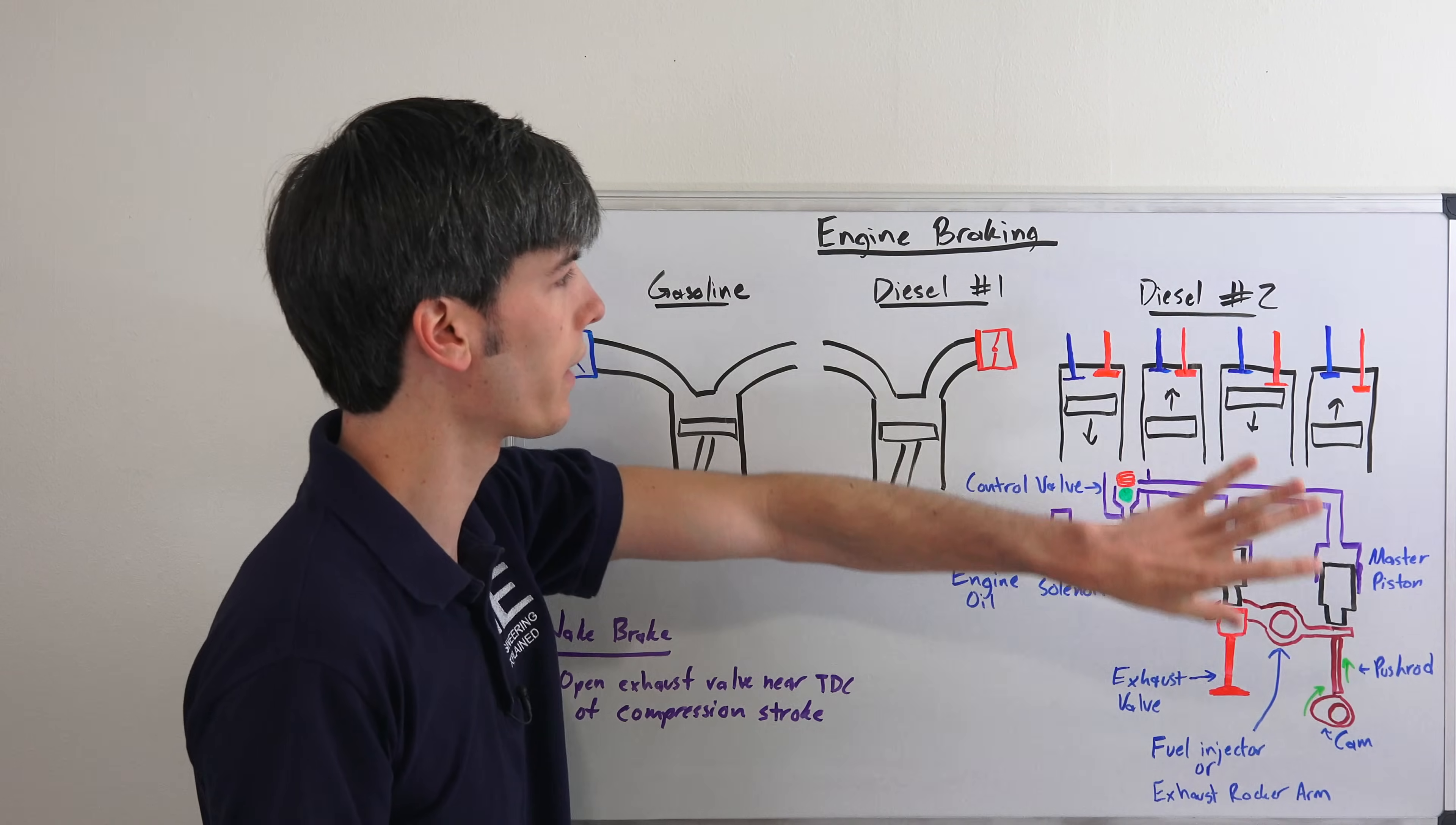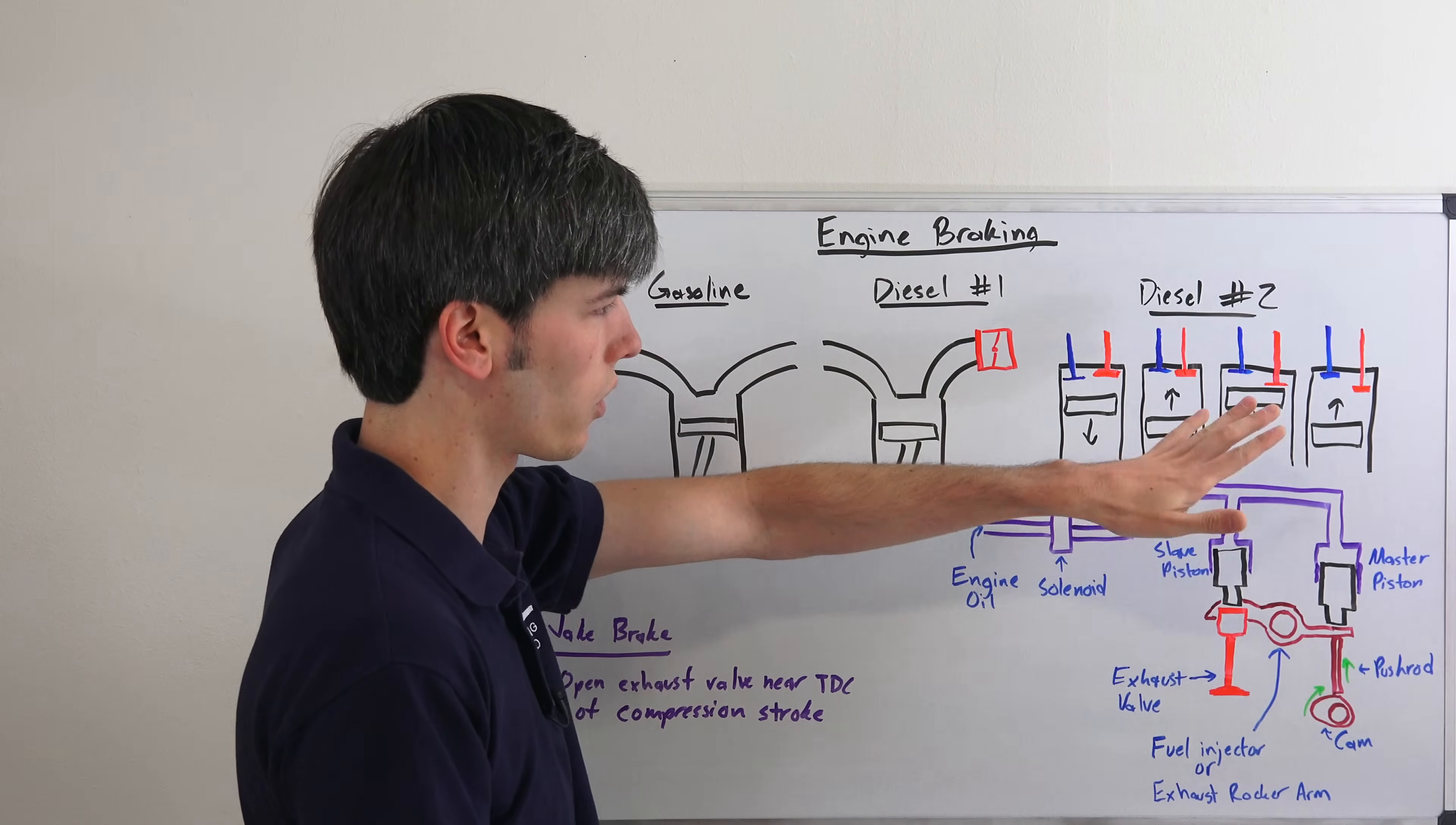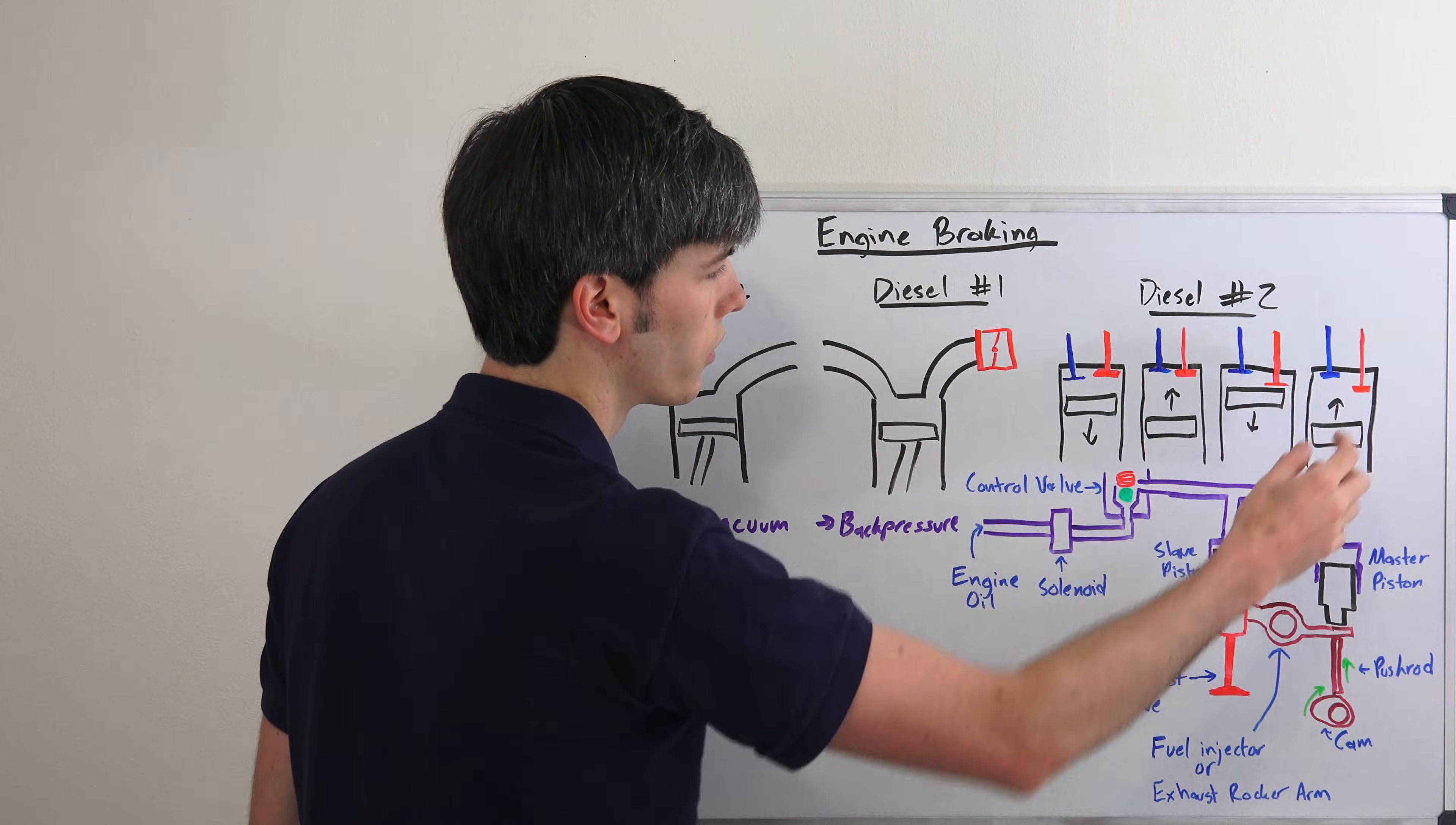Then we have our final method which is the jake brake. It's commonly referred to as a jake brake after the company that invented it which is called Jacobs. So here what we have is our four strokes. We've got our intake, compression, power, and exhaust.